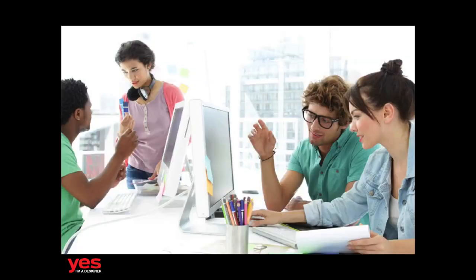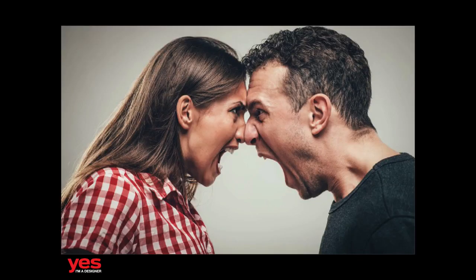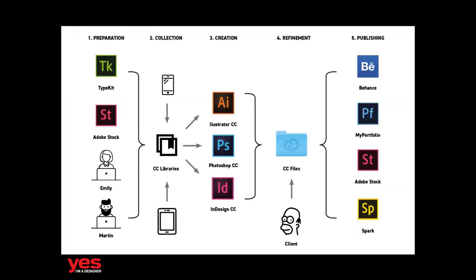You can use the Creative Cloud services to work with people in the same room, or to work together with people from all around the world. There are five stages normally that I divide a project in. The first one is the preparation, where you need to decide what resources you are going to work with, then collecting everything together, then the creation, refinement, and then publishing. The preparation part is what we are doing right now.